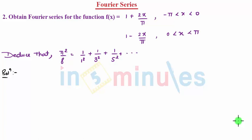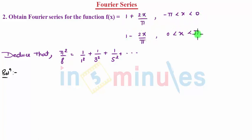Hello students, welcome to In 5 Minutes. Let's check with another sum of the same type, from minus pi to pi. Your f of x is given as 1 plus 2x by pi for minus pi to 0, and 1 minus 2x by pi for 0 to pi.